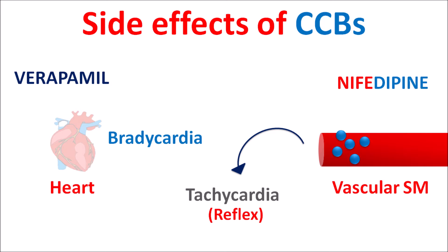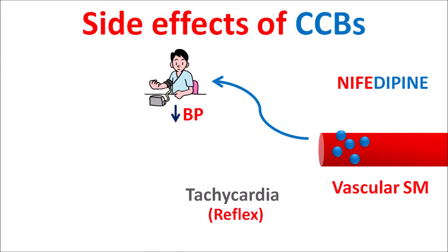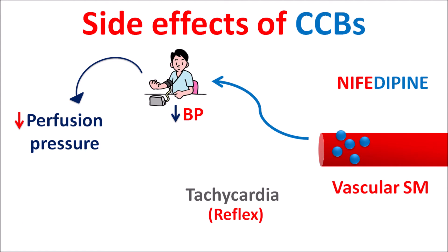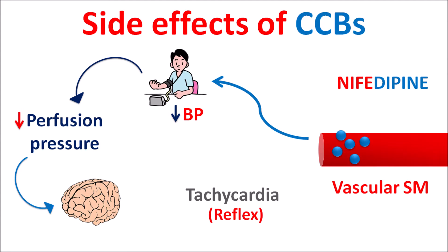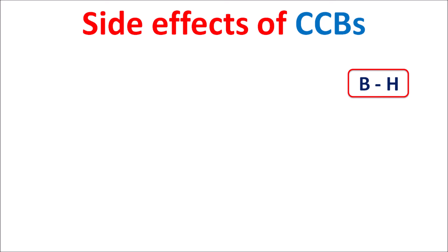This tachycardia is a reflex action. Verapamil produces bradycardia whereas nifedipine produces tachycardia. The tachycardia produced by dihydropyridines is indirect: vasodilation causes decreased blood pressure, which reduces perfusion pressure, activating the baroreceptor reflex. This stimulates the CNS to release catecholamines, which act on the heart to increase the rate of contraction, leading to reflex tachycardia. So dihydropyridines produce reflex tachycardia indirectly, whereas verapamil produces bradycardia through direct action on the heart.